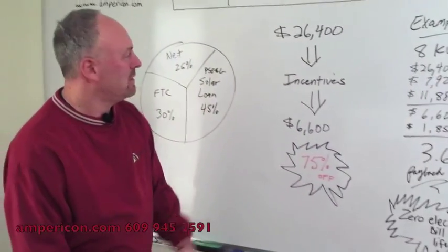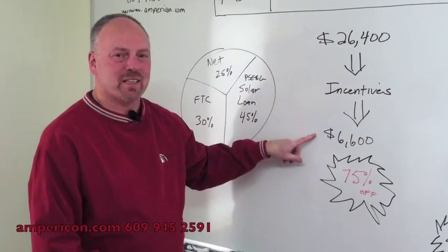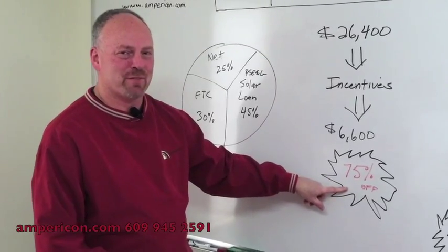At a high level, the system costs $26,400. After incentives, $6,600. That's a whopping 75% off.